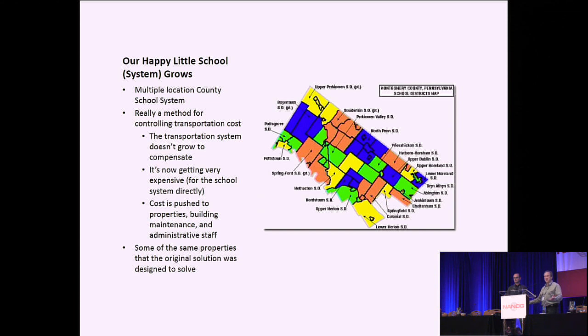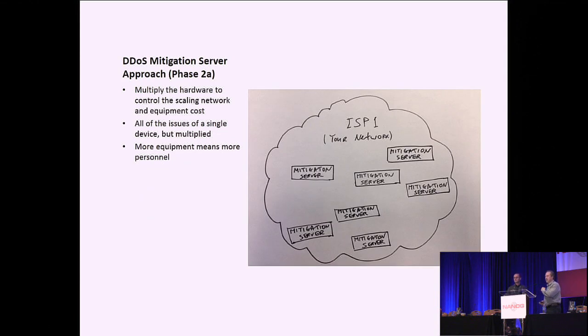So what the school system does for this is they go to a county style model so that each county ends up building their own school system and they all have their own little buildings. But now the transportation system doesn't have to grow. So they do this for a cost savings benefit. However, what happens is now they have to have administrative staff and they have to keep up with all the buildings that they're putting out there and all the different pieces. Some of these same properties that they were trying to overcome from a cost, they just moved around. And that's what you find happening with DDoS as well. And we basically end up adding more and more of those mitigation servers across the network. And usually what happens is more hardware means more management and more personnel. And more tools that you have to deploy in order to deal with it. And so the benefit of this is you've pushed it out and now the core of your backbone doesn't necessarily have to grow because you're catching it closer to the edges. That's a good thing.